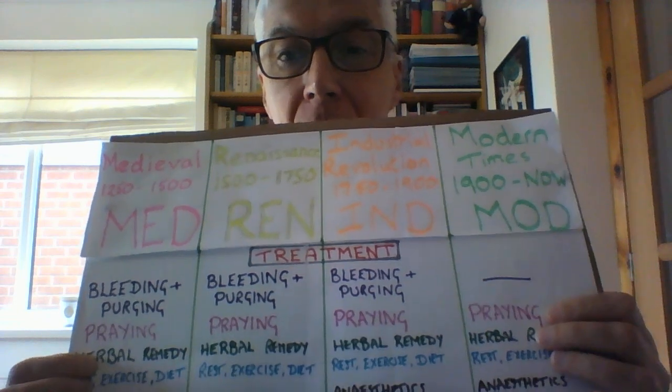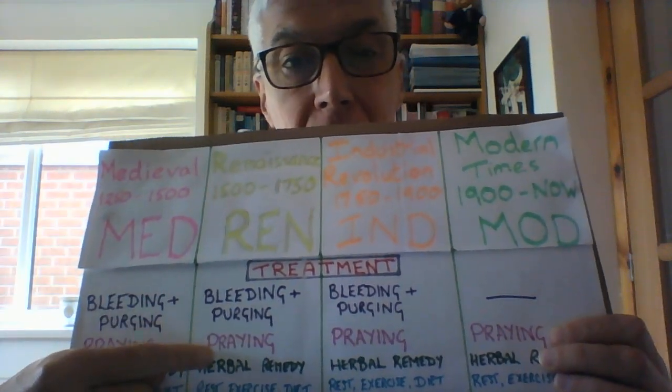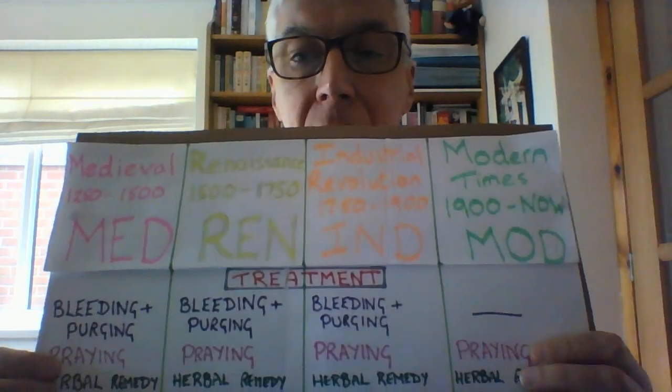The third treatment: herbal remedies. Go back to medieval times. If you were ill and very, very poor — which is most people — you had to pay for a doctor, and hardly anyone could afford that. So many people went to the local wise woman, who would have knowledge of plants and herbs and would concoct medicines for you. Herbal remedies were used in medieval times, even in the renaissance. Despite the increase in scientific knowledge about the body, they're still using herbal remedies — and in the industrial revolution, and even today, many of our tablets and medicines are made up of plants and herbs. Herbal remedies have continued all the way throughout our medicine course.